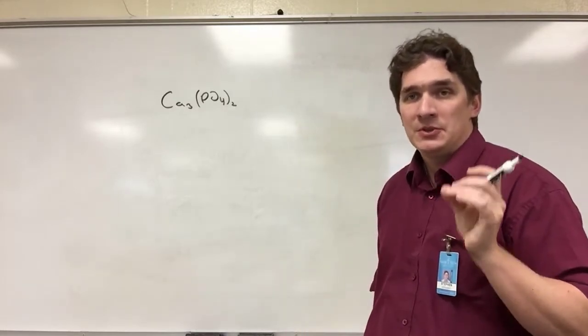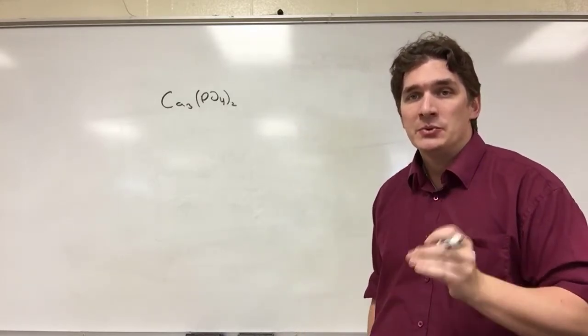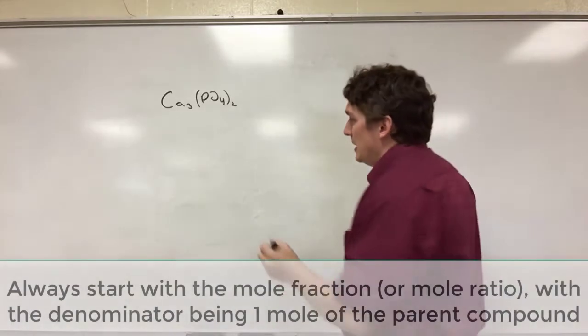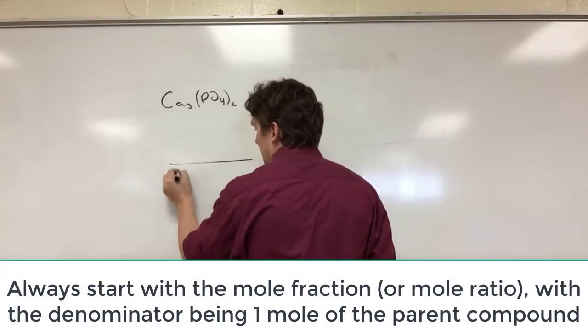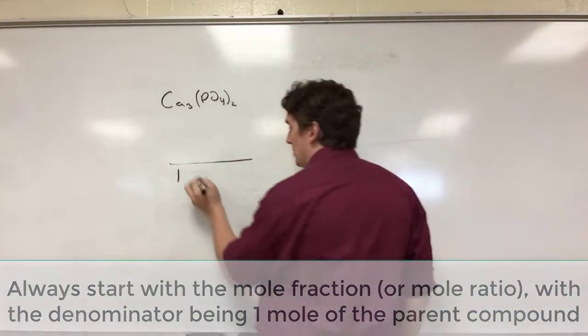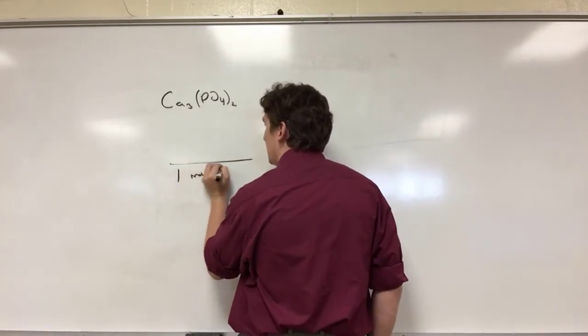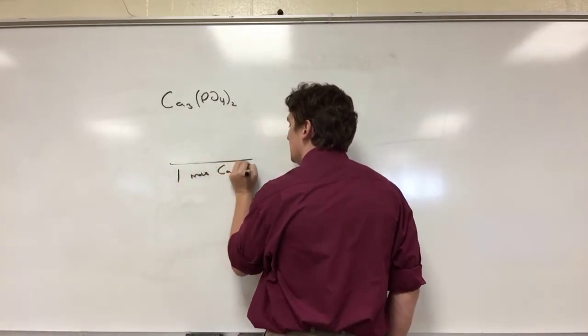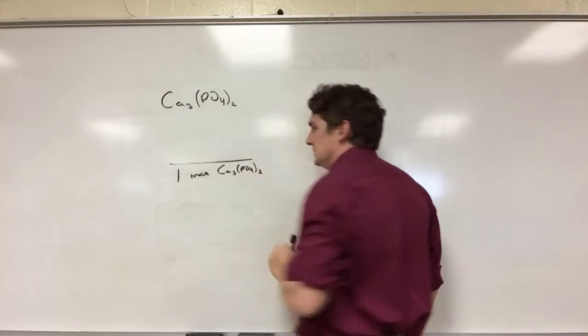So to get the theoretical weight fraction we're always going to start with the mole fraction. And our mole fraction is always in the denominator going to have one mole of our parent compound. In this case Ca3(PO4)2 taken twice.